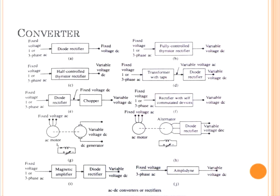Disadvantages associated with the commutator and brushes of the DC generator are removed in the converter of figure H; however, this converter can operate in a single quadrant only. Some very old equipment may also employ AC to DC converters of figures I and J, employing magnetic amplifiers and amplidyne respectively. Magnetic amplifiers and amplidyne are controlled from low power DC signals.